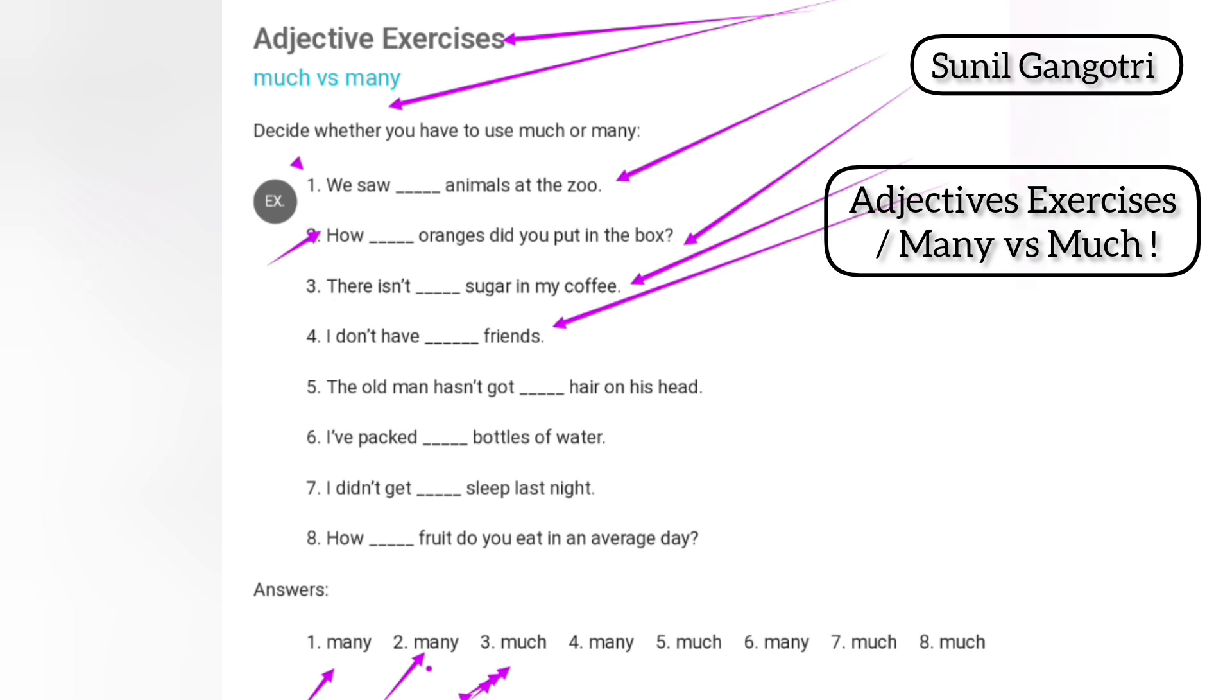Number four: I don't have blank friends. So question number four, so answer four. I don't have many friends. Number five.